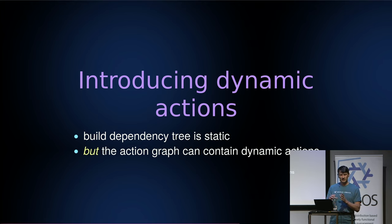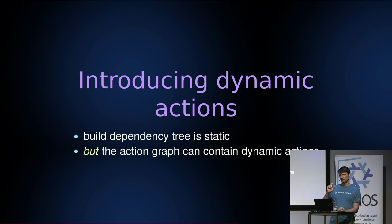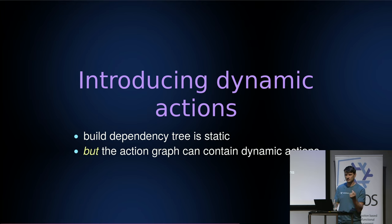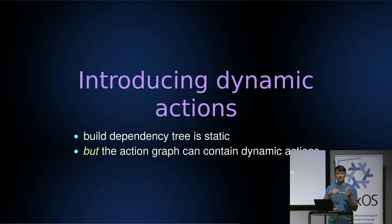Buck2 provides dynamic actions. Inside the action graph, you can have special actions that depend on the output of another action, and inside the implementation function of that dynamic action, it is able to actually read the file — usually a JSON file. Inside that implementation, it can create other actions. That's the dynamic part: you read a dependency file, you know how your dependencies are laid out, you create actions to traverse that dependency information, and then you create new actions based on that information.